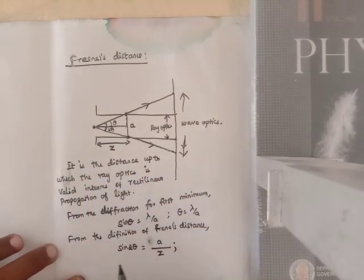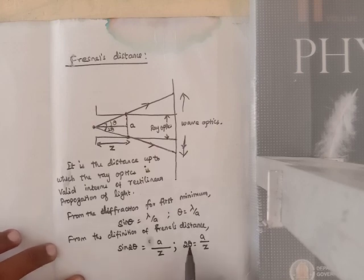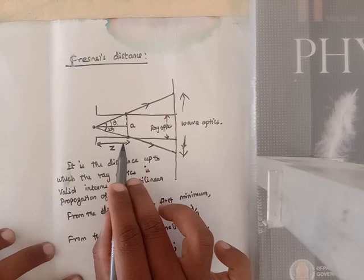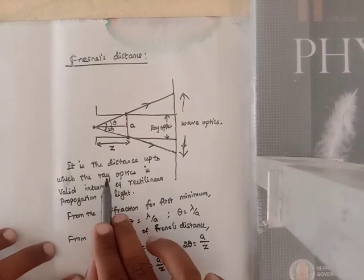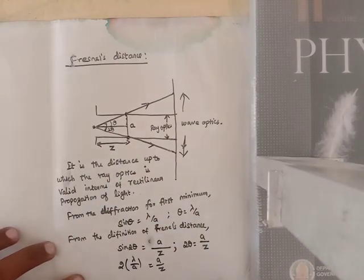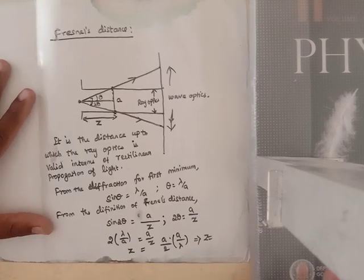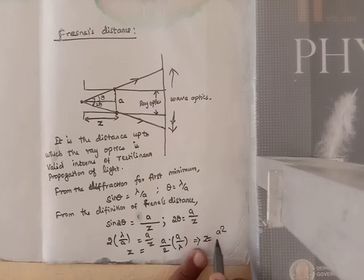For the smaller angle, sin theta equals theta, so 2 theta is equal to A divided by Z. Substituting the value of theta which is lambda divided by A, we get 2 times lambda divided by A equals A divided by Z. Therefore, Z is equal to A squared divided by 2 lambda. This is the frontal distance.